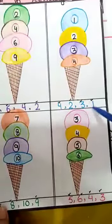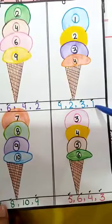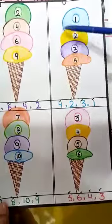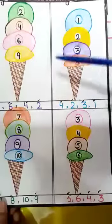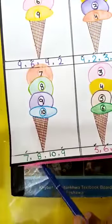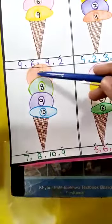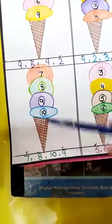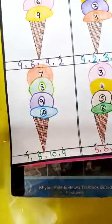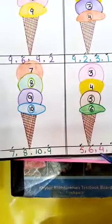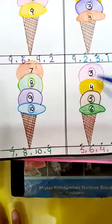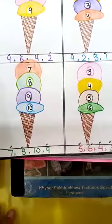The next one is 4, 2, 3, 1. The smallest number is 1, then 2, then 3, then 4 — ascending order. The next one is 7, 8, 10, 9. Arranged: 7, 8, 9, and 10 — from smallest to biggest, ascending order. The next is 5, 6, 4, 3. From smallest to biggest: 3, 4, 5, 6 — that order is called ascending order.